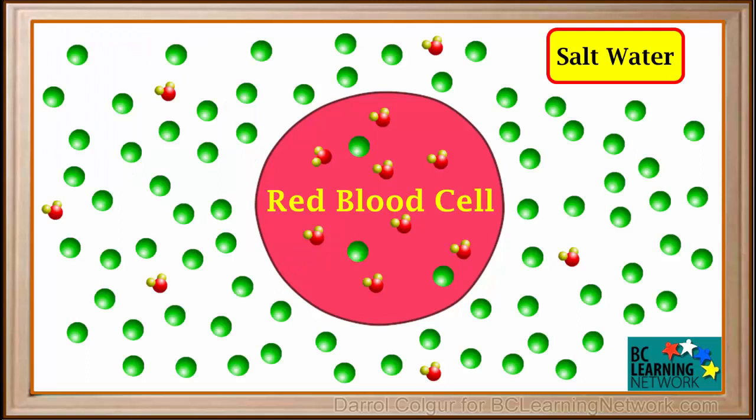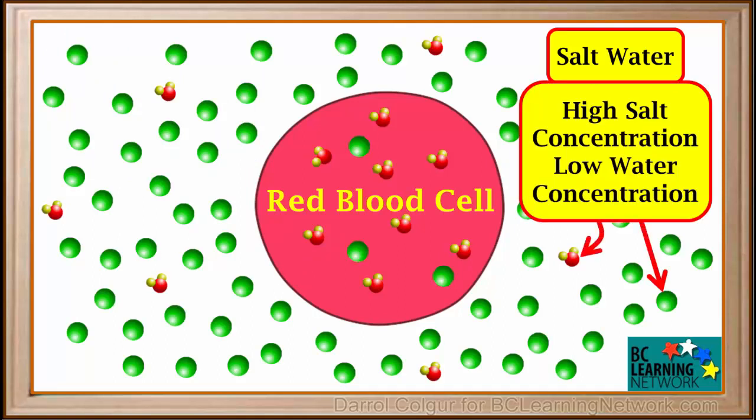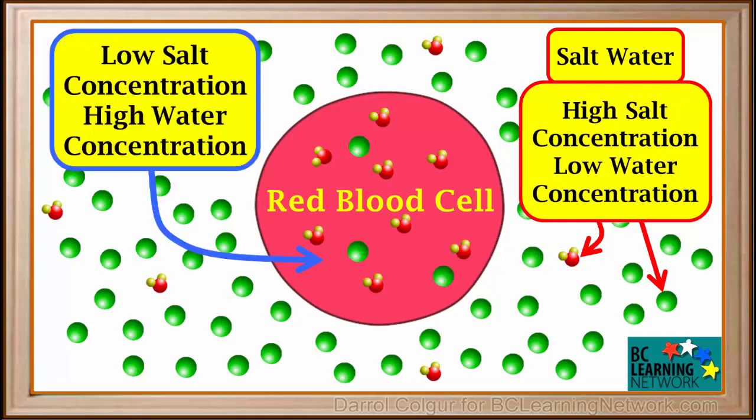Now we will put the cell in some salty water. You can see that the salt water outside the cell has a high salt concentration and a low water concentration. There are way more green spheres shown here than water molecules. So the cell is low in salt and high in water, whereas the solution is high in salt and low in water. Look at this diagram and make sure you understand this.